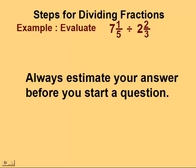First, try to estimate what your answer would be. What would 7 1/5 divided by 2 2/3 be approximately? Even if you get a range between two whole numbers, that would be fine. If I'm looking at this question, I'm thinking it's somewhere between 2 and 4.